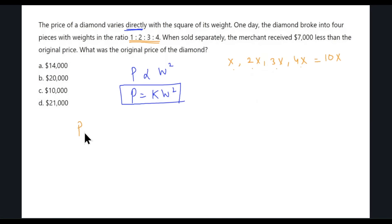The original price, let's call it P1, will be equal to K times 10X squared because 10X is the weight. So the original price P1 is 100KX squared. Let's box this in.